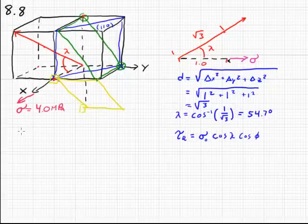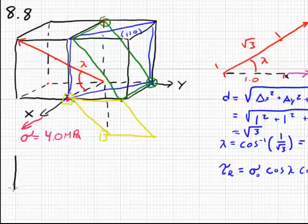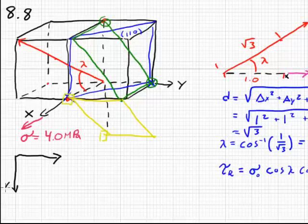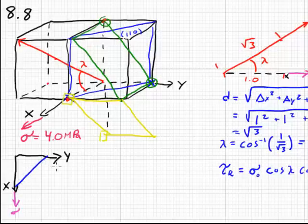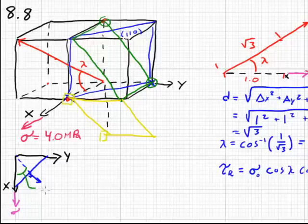The first one will be for the 1-1-0 plane. And the 1-1-0 plane is perpendicular to the x-y plane. And here's the direction of stress. And our plane has a normal vector that gives a 45 degree angle with the direction of stress. This is angle phi for the 1-1-0 plane.